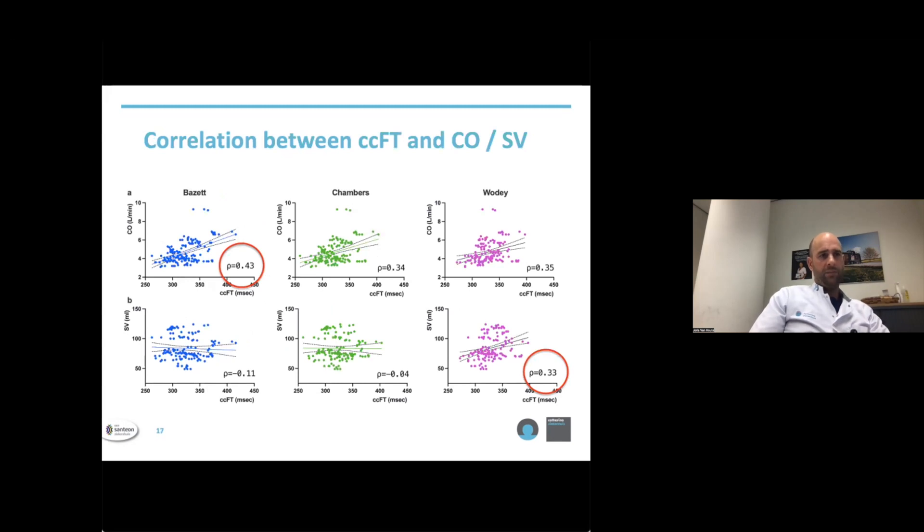In this figure, the correlation between cardiac output and CCFT in the upper rank, and between stroke volume and CCFT in the lower rank can be seen. We observed that the correlations differed depending on the equation used. Spearman's correlation between CCFT and cardiac output was highest for Bazett's equation, with a moderate R-value of 0.43. Spearman's correlation between CCFT and stroke volume was highest for Wodey's equation, but only weak, with an R-value of 0.33.